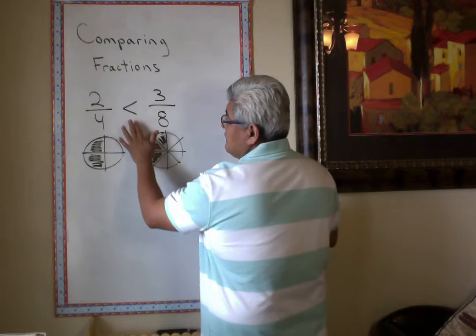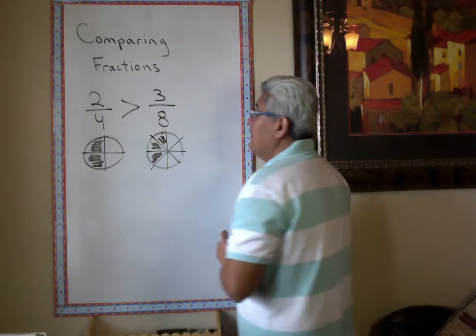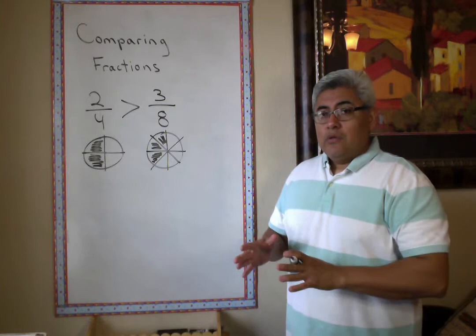That's why it's very important to pay attention to your denominator and your numerator. Now we can see that this number, or this fraction, is actually greater. 2 fourths is greater than 3 eighths.